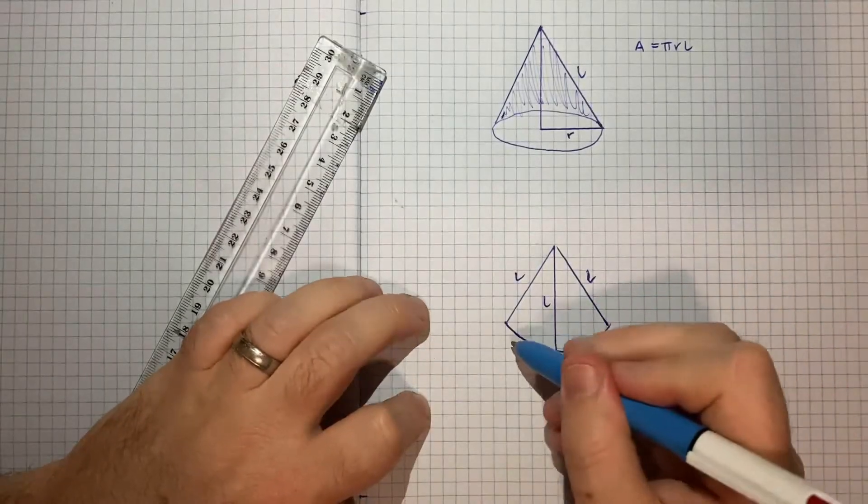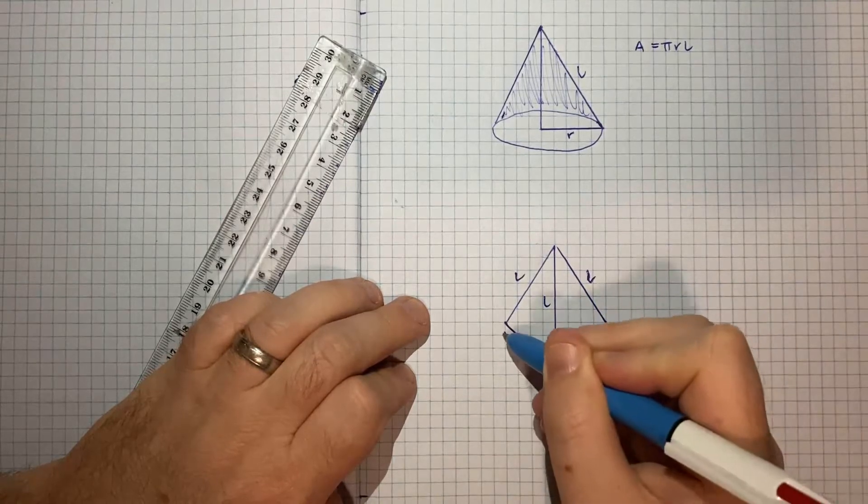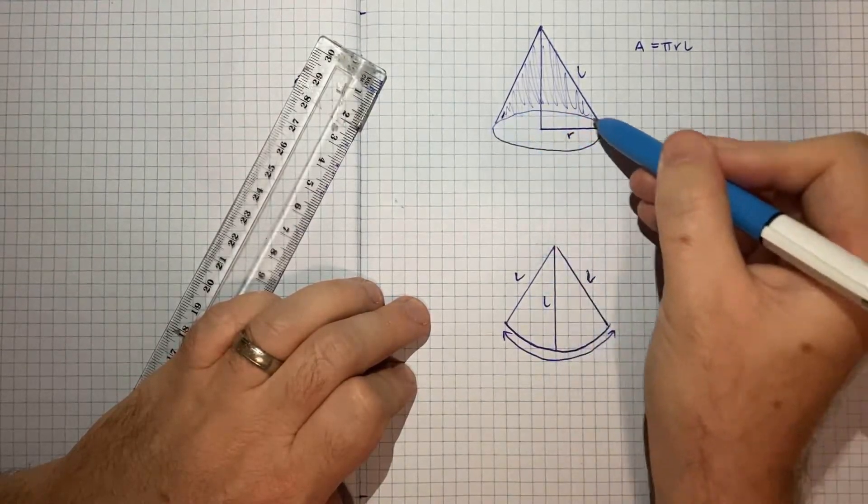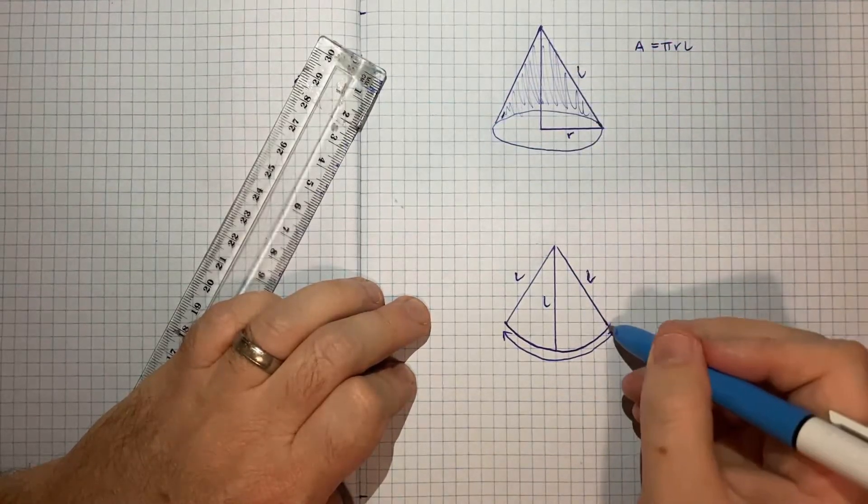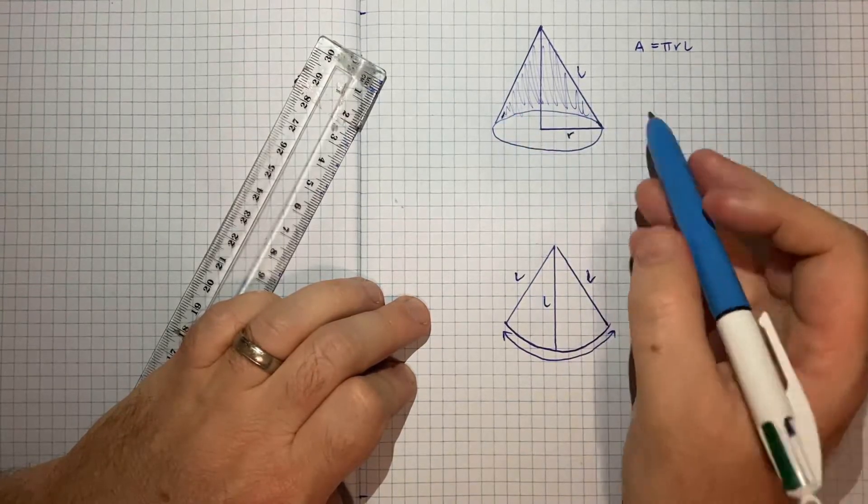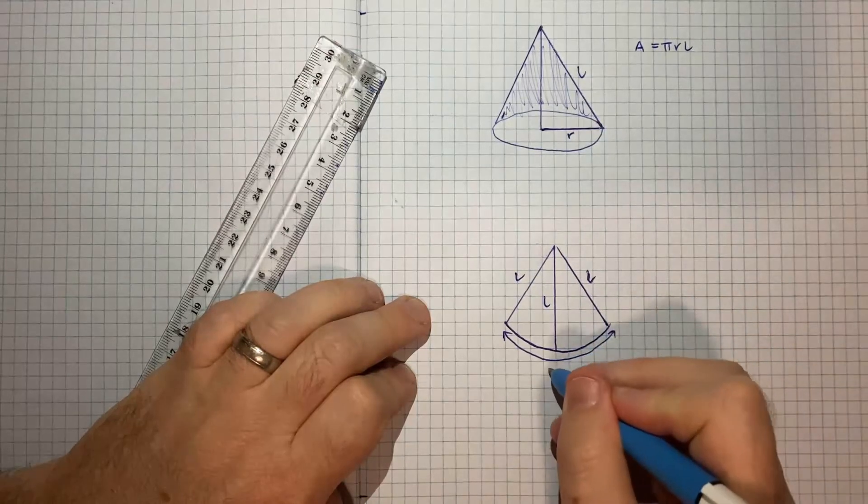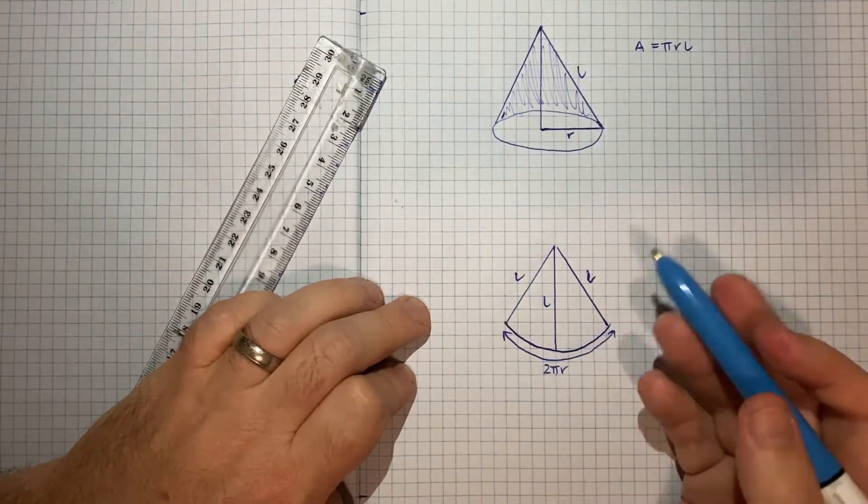Now the length of this arc from here to here we know is the circumference of this circle, because the cone wraps around the circle, so this part would have to wrap around the length of the circle. So the circumference of the circle with radius r would be 2 pi r. That's the formula for the circumference of the circle.